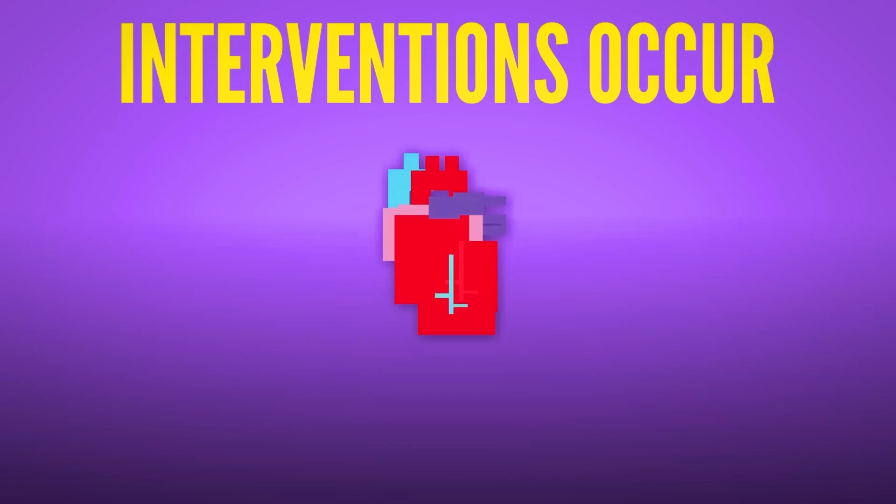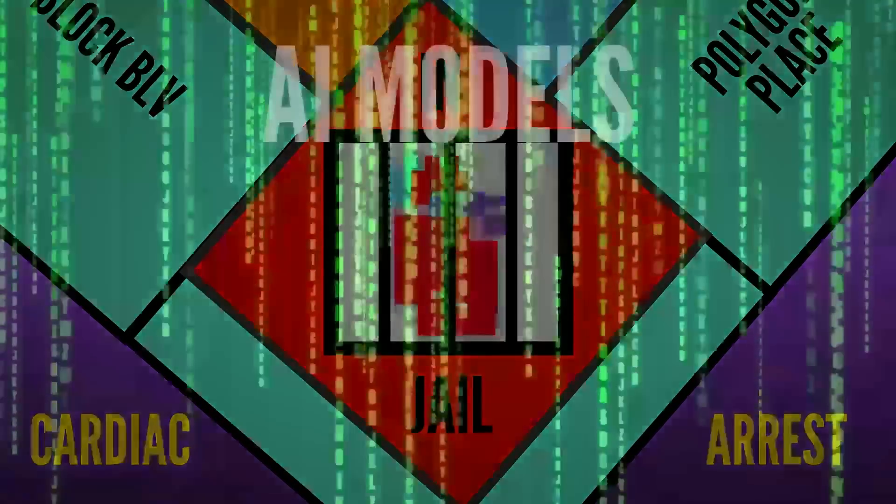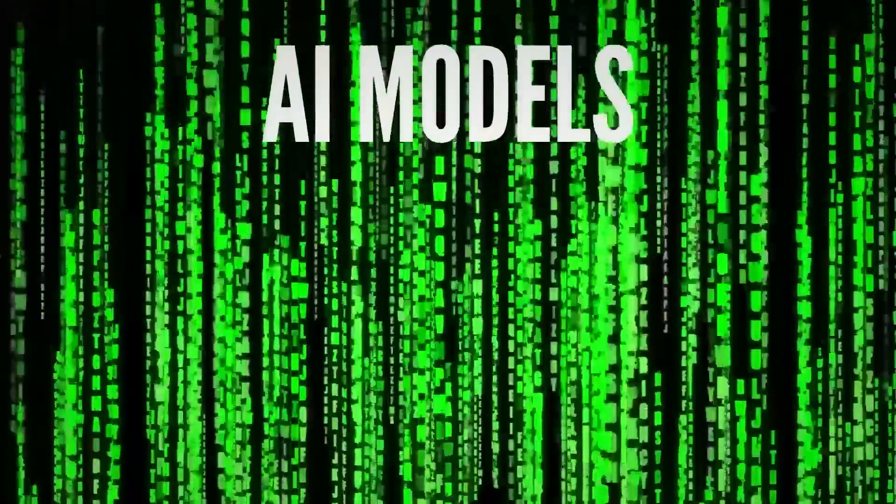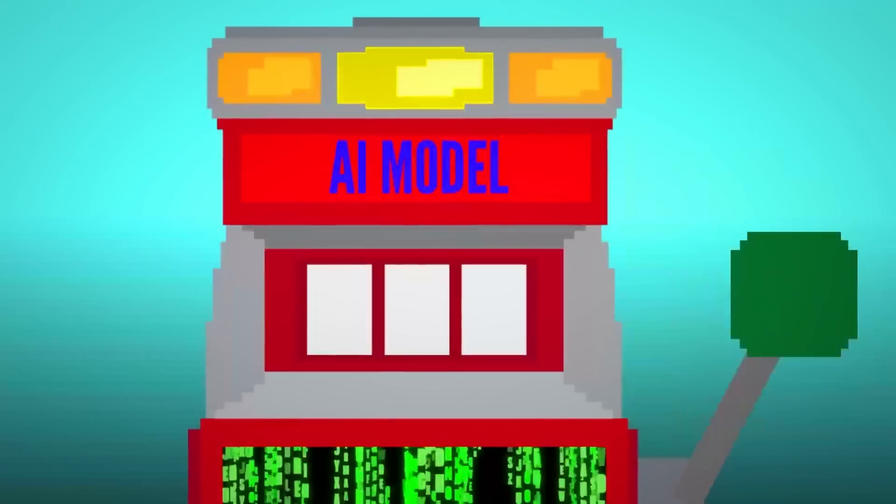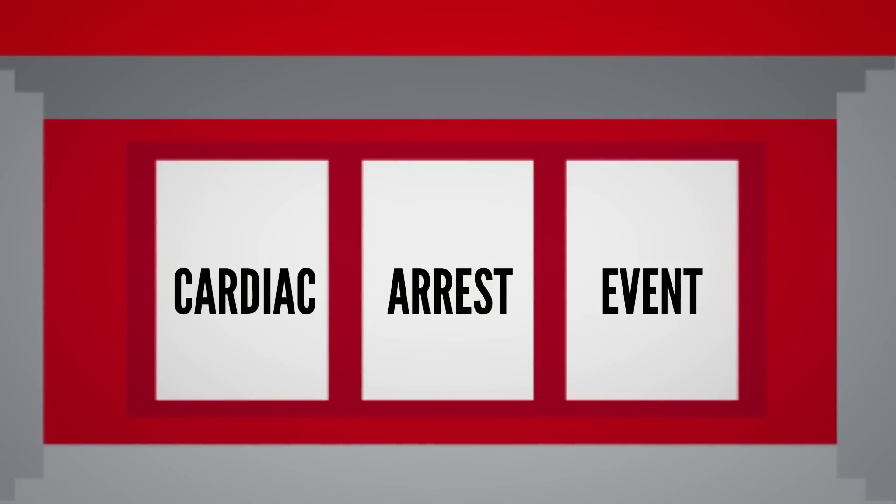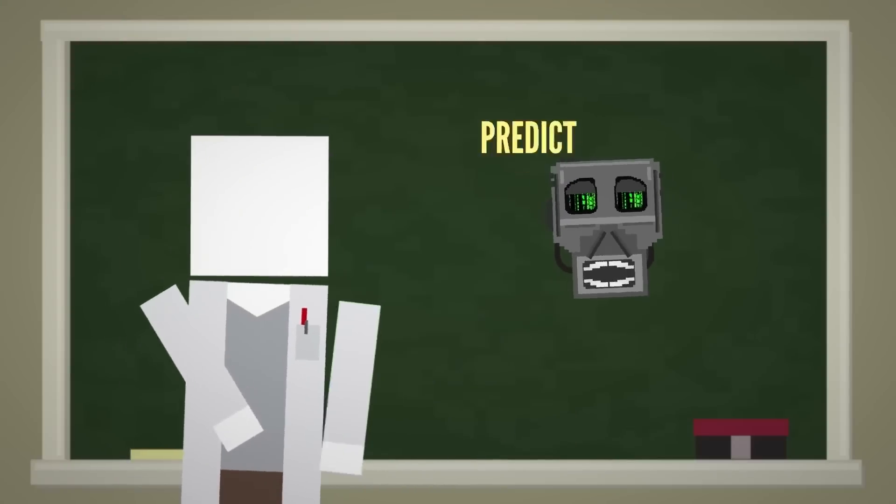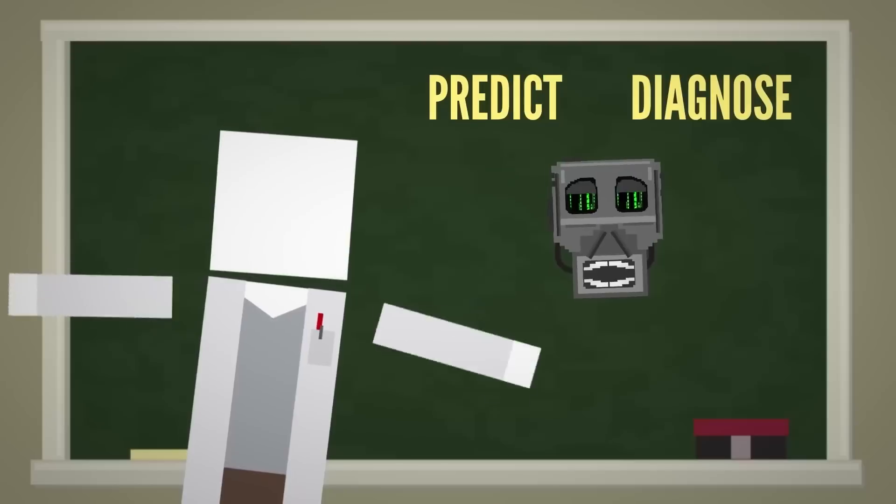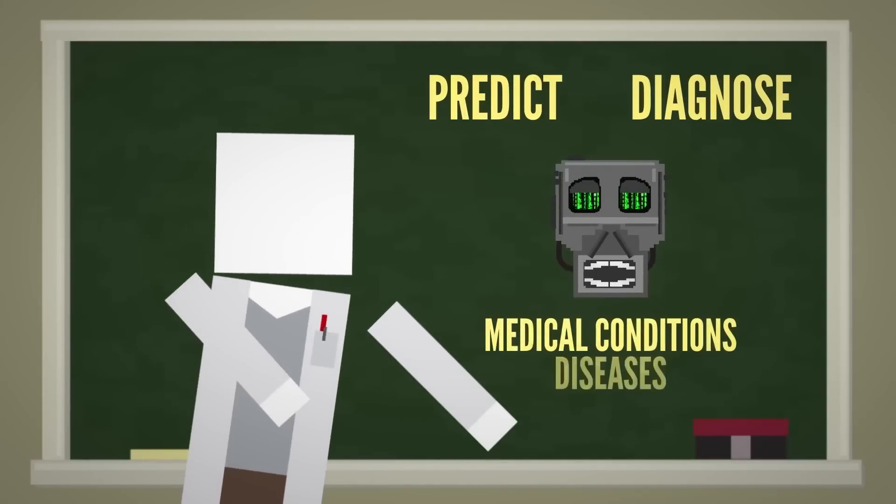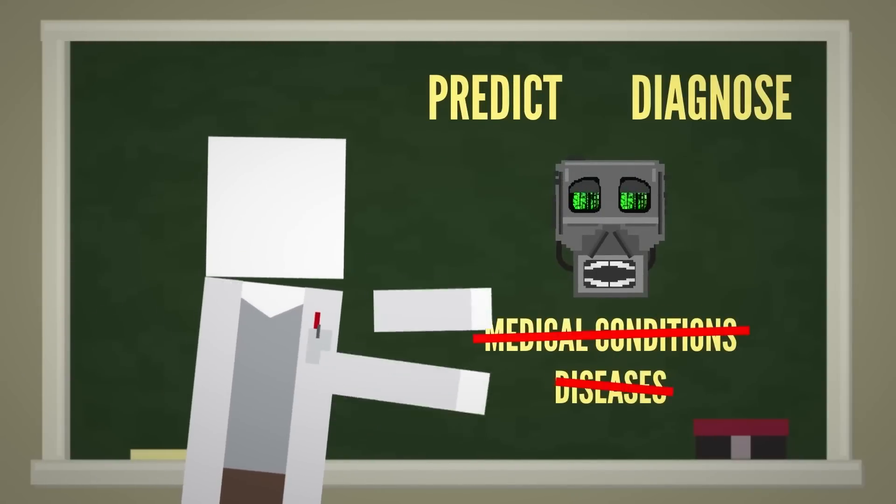These interventions are for after cardiac arrest occurs, but researchers are developing AI models that can predict the future, at least in terms of your health. This includes models that can predict a cardiac arrest event before it happens, as well as ones that can predict or diagnose a wide range of other medical conditions and diseases so they can be prevented or treated right away.